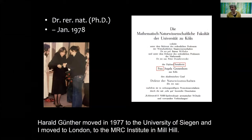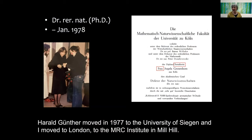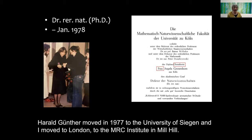In 1978, I finally received my PhD — and by that time I had become female on paper. Harald Günther went to the University of Siegen, and I went to the MRC Institute in Mill Hill. Here is a picture of my brother at my PhD exam. In Germany, you take an oral exam and they say yes or no. Afterwards, I had a tiny bottle of champagne, sharing it with my brother — to this day we share a taste in science and a taste in wine.